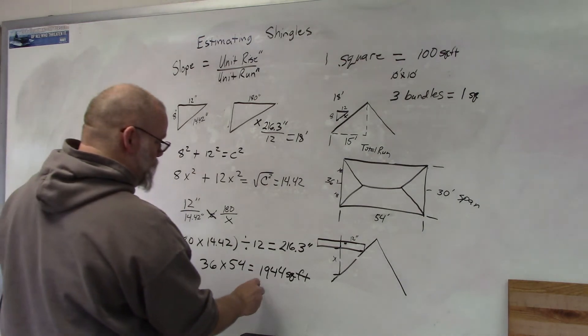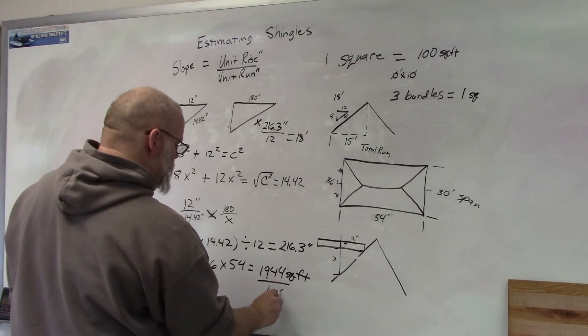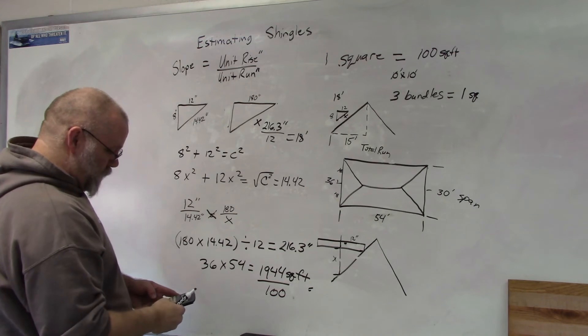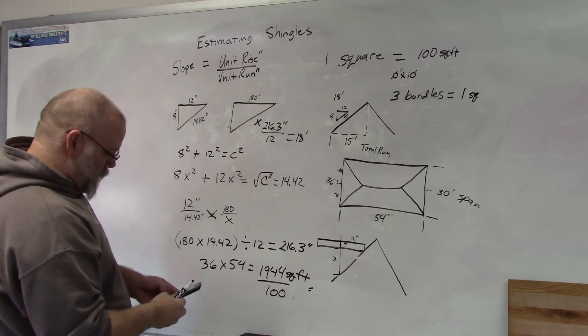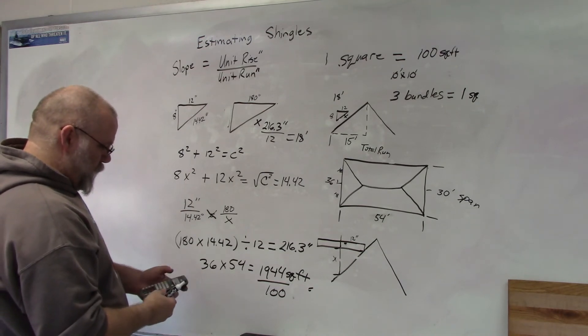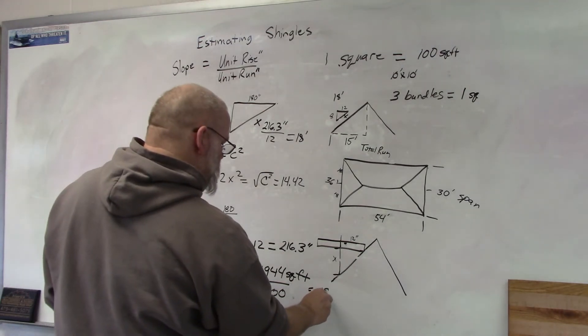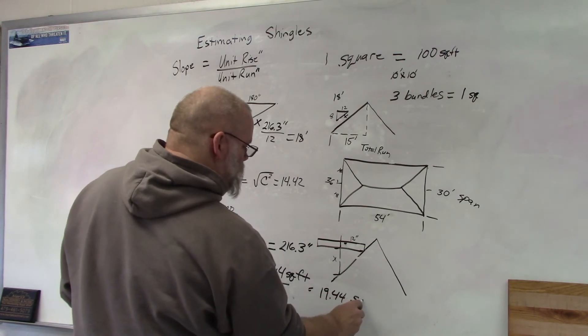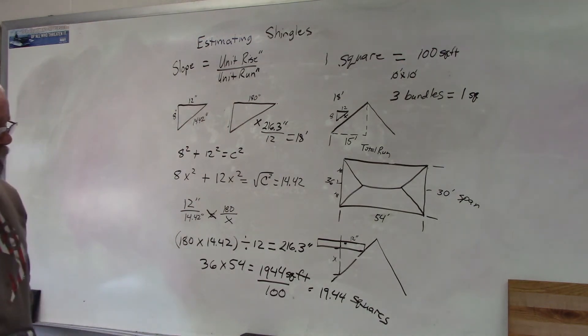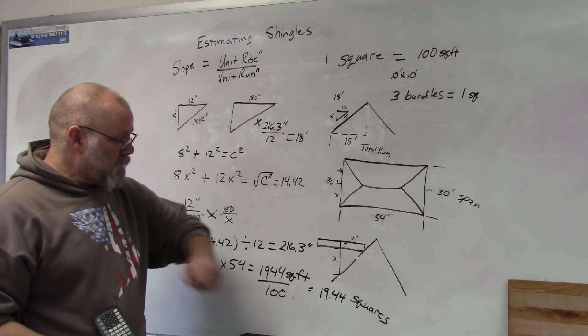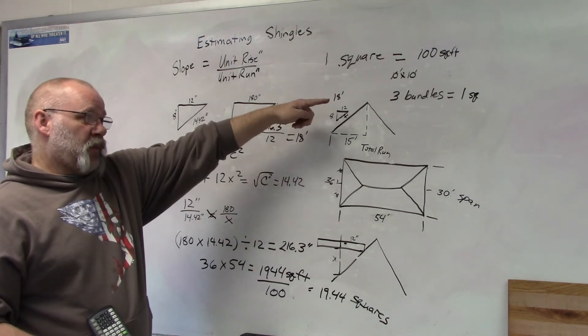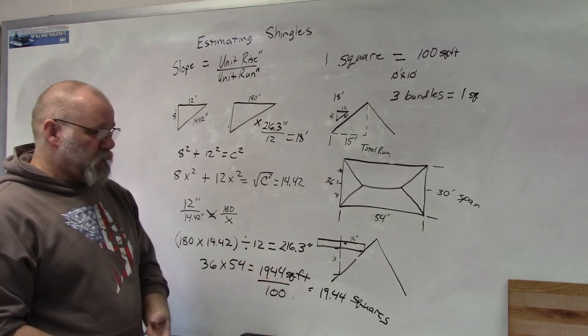Then I'm going to divide by 100 because there are 100 square feet in a square. 1,944 divided by 100 gives me 19.44 squares. So I've got 19 and a half squares. You can't buy 19 and a half squares because you can't get half a bundle, so I would probably round it up to 20.